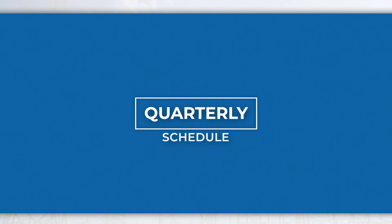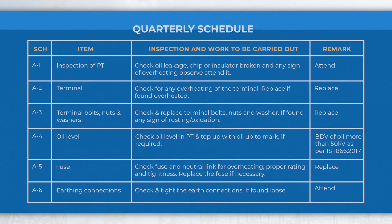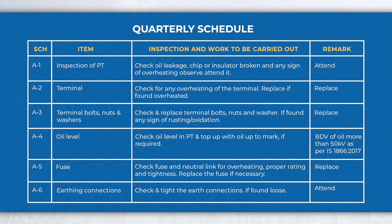Quarterly schedule: In the quarterly schedule, perform activities like checking the surface of the porcelain insulator, the terminal connector for overheating or rusting, checking the oil level in the bushing, fuse and neutral link for overheating and earthing connections, etc.